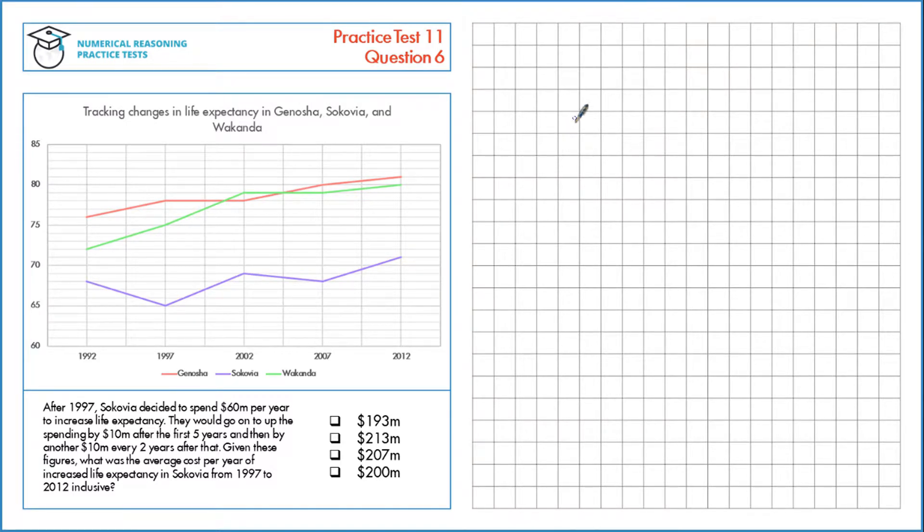After 1997, Sokovia decided to spend $60 million per year to increase life expectancy. They would up the spending by $10 million after the first 5 years, and then by another $10 million every 2 years after that. Given these figures, what was the average cost per year of increased life expectancy in Sokovia from 1997 to 2012?